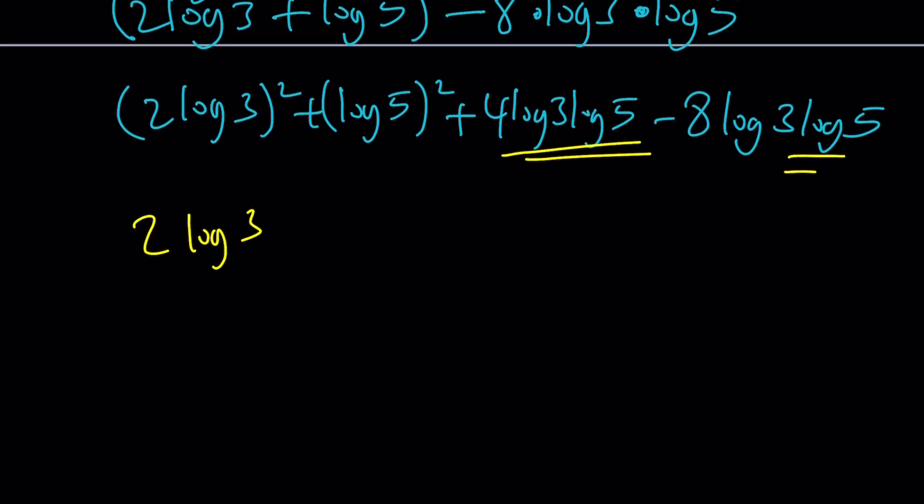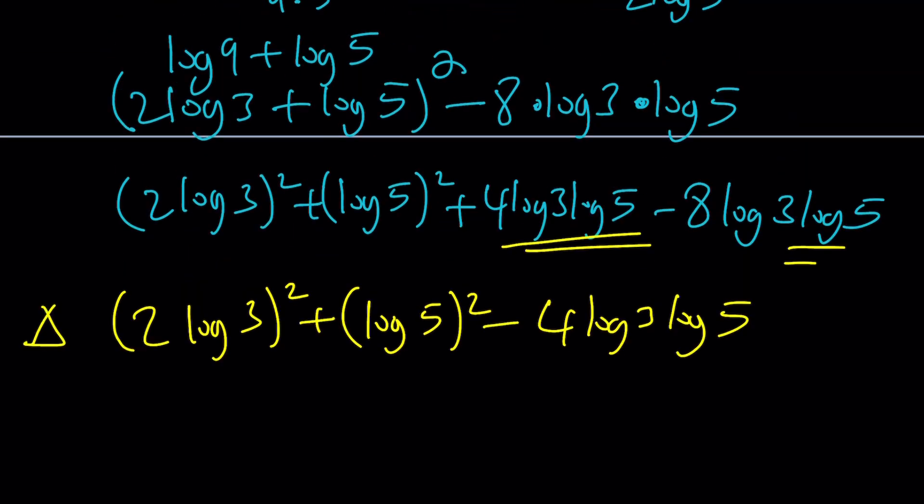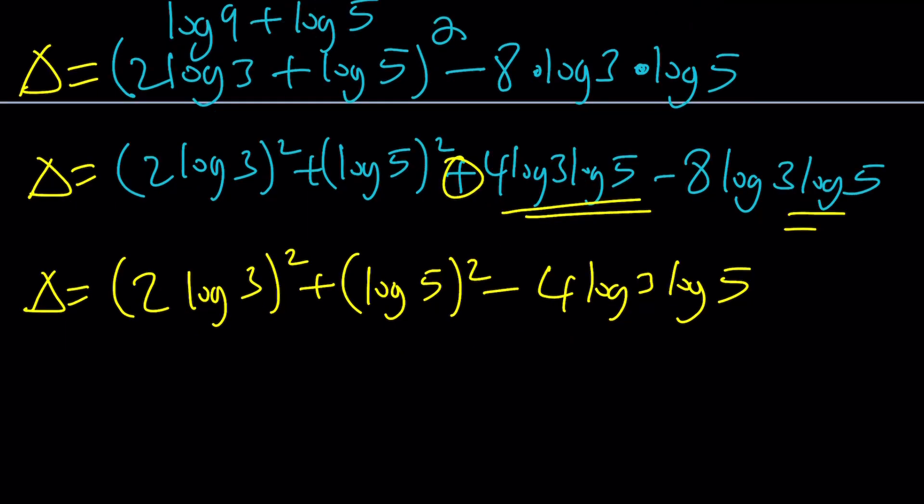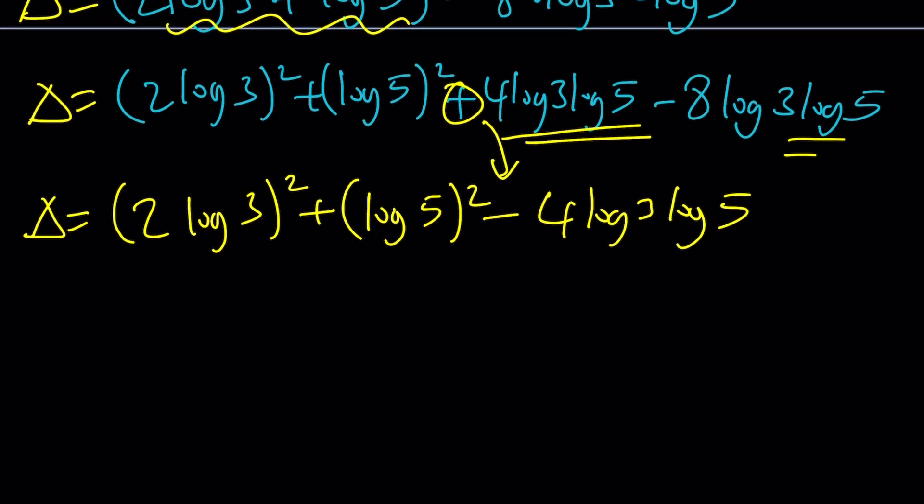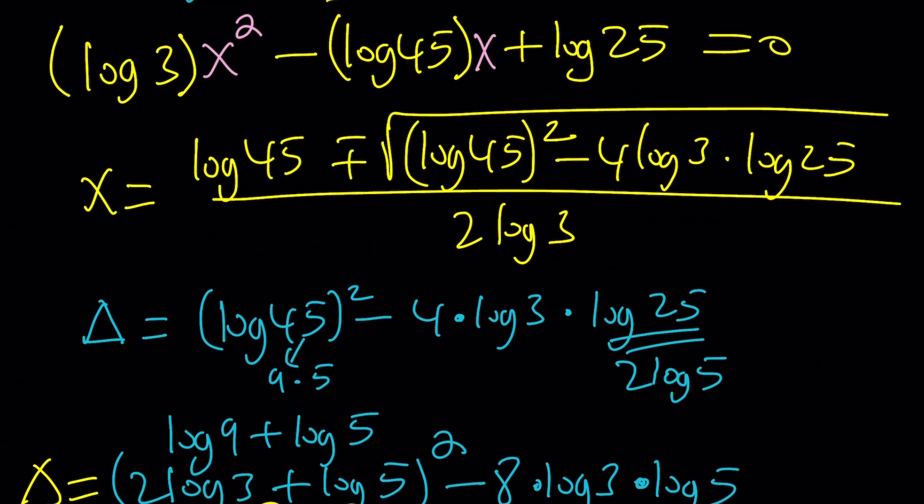2 log 3 squared plus log 5 squared minus 4 log 3 log 5. Now notice that this is the discriminant, right, or delta, obviously. Now notice that this plus sign turned into a minus sign here. And this is the square of something. Take a look. You can kind of copy the same pattern. This is basically 2 log 3 minus log 5 quantity squared. And that's actually perfect because under the radical, under the square root, it's just going to disappear, right?